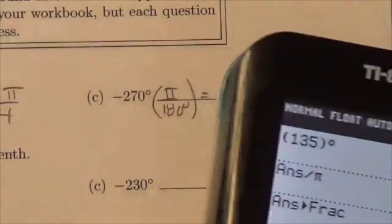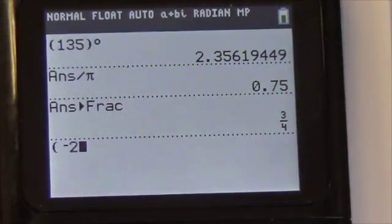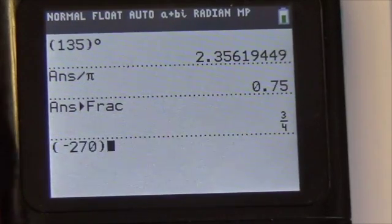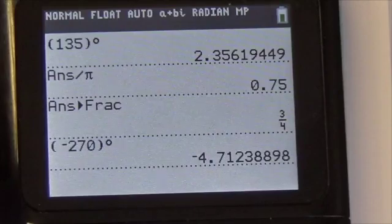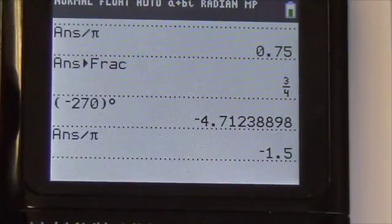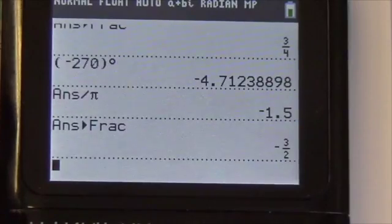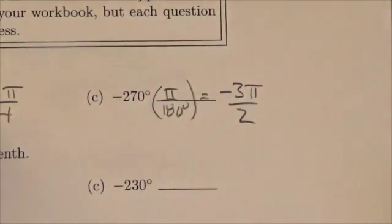And then finally, we'll try this one. Negative 270. Tell the calculator by going into your angle menu that that's a degree. There's my answer. But I'm going to divide out the π, convert that to a fraction, and then put the π back in. Negative 3π over 2. There you go.